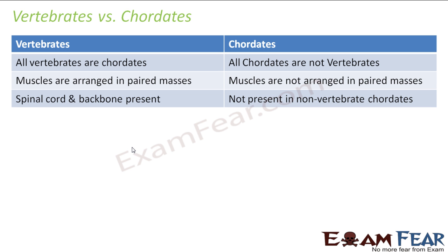Let us look at the differences between a vertebrate and a chordate. Many people think that vertebrates and chordates are the same thing, but chordates are those who have a notochord — any organism with a notochord is a chordate. Therefore all protochordates also fall under chordates, and all vertebrates also fall under chordates. But the difference is that vertebrates also have a dorsal nerve cord along with the notochord. So all vertebrates are chordates, but not all chordates are vertebrates — for example, the protochordates are not vertebrates.